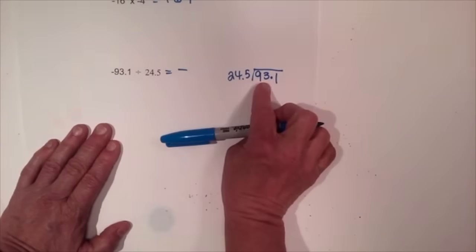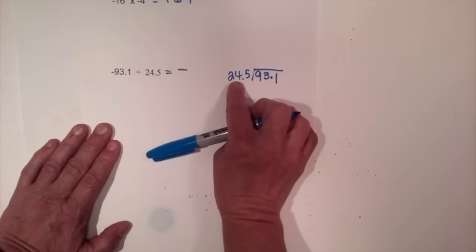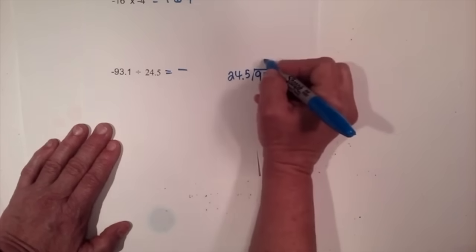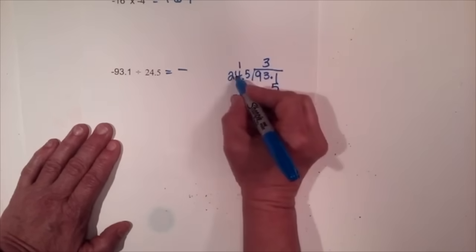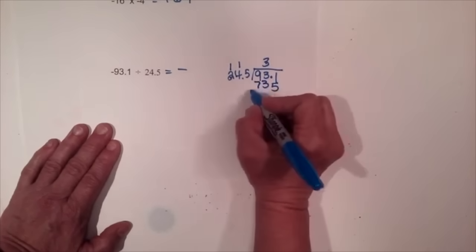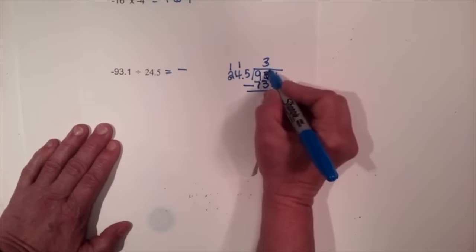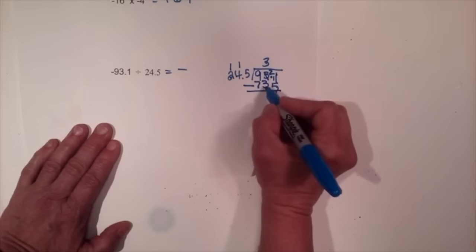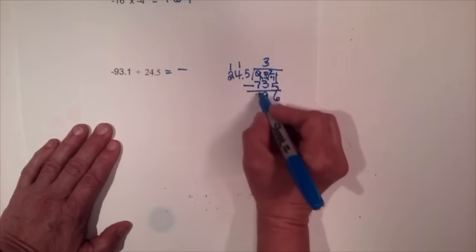How many times will twenty-four go into ninety-three? Twenty-four is close to twenty-five, so estimating: twenty-five plus twenty-five is fifty, plus another twenty-five is seventy-five, plus a fourth would be a hundred — but I don't have a hundred, so it has to be three. Three times five is fifteen, carry the one; twelve plus one is thirteen, carry the one; three times two is six plus one is seven. Subtracting: eleven minus five is six; twelve minus three is nine, borrow; eight minus seven is one.